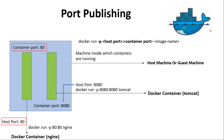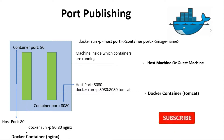Similarly, when we started the Nginx server with host port 80 and container port 8080, and tried to access the Docker container from the host IP and host port 80, the traffic on host port 80 got routed to container port 8080, and we were able to successfully access the Docker containers running inside the host or guest machine.